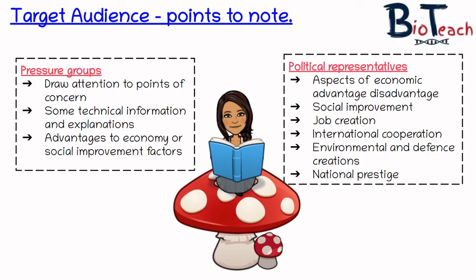The last point is national prestige. This basically means that if our government is seen to be getting involved in something that's quite scientific, innovative and new, then that might bring them national prestige. We might be considered as trailblazers in a certain area or advancement of science. So that's quite a good point to write down.